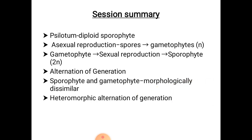Now let us summarize this session. Psilotum is a diploid sporophyte. Asexual reproduction takes place by spores, which give rise to haploid gametophyte. The gametophyte, after sexual reproduction, produces a diploid sporophyte. It shows alternation of generations. The sporophyte and gametophyte are morphologically dissimilar and show heteromorphic alternation of generations.